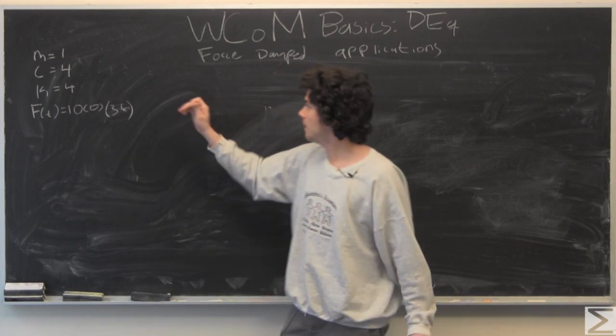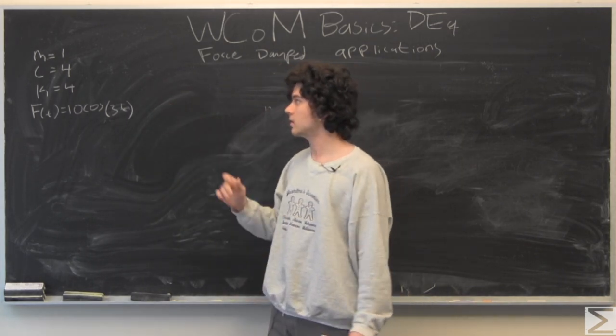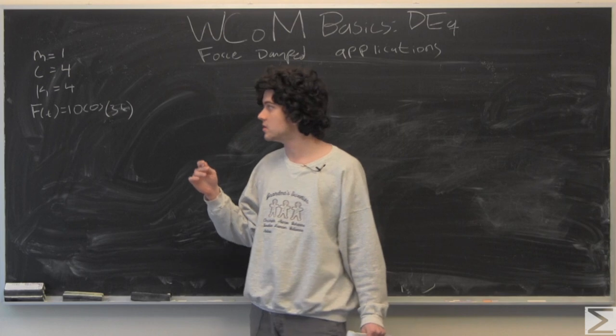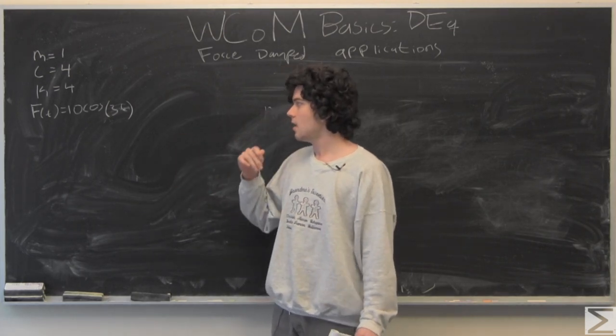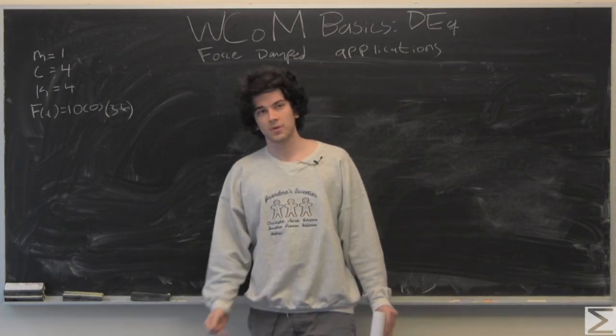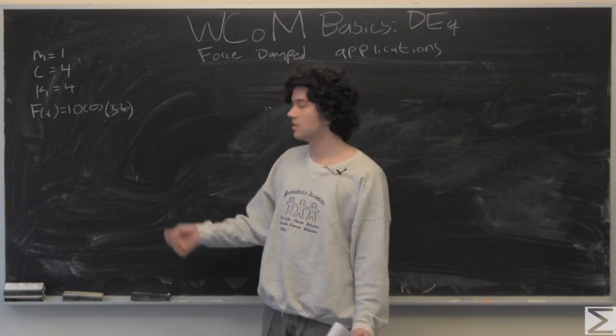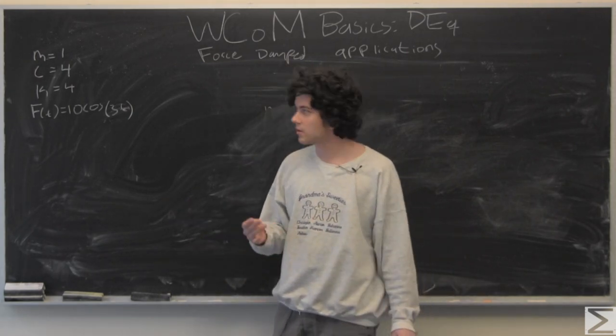So here, we're given our constants: mass, damping coefficient, and spring coefficient. And we're also given our force as a function of time, which is 10 cosine of 3t.